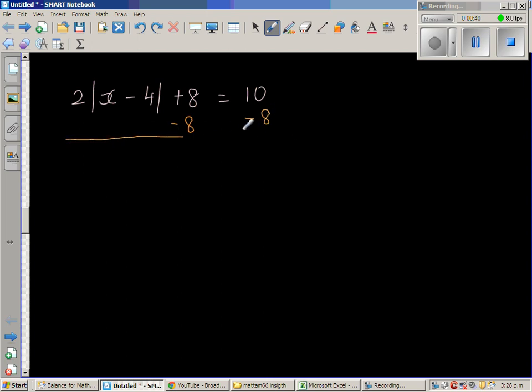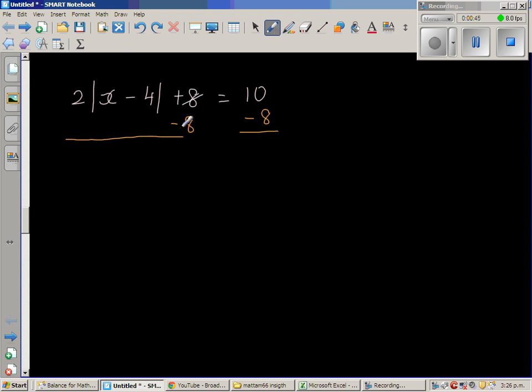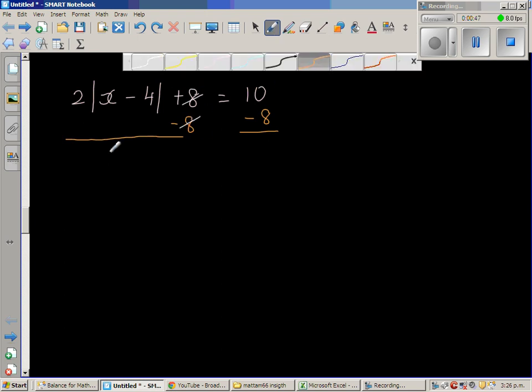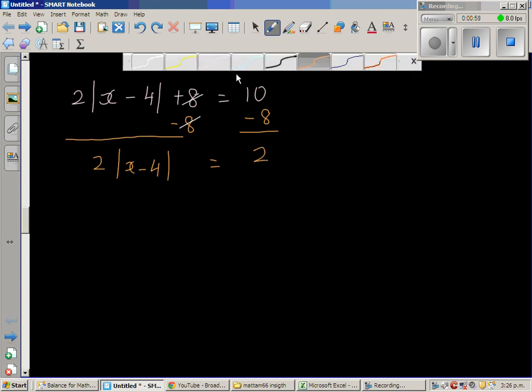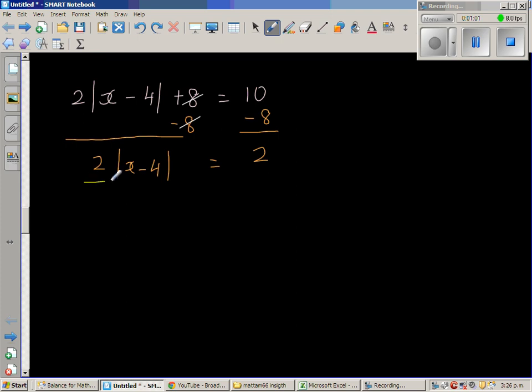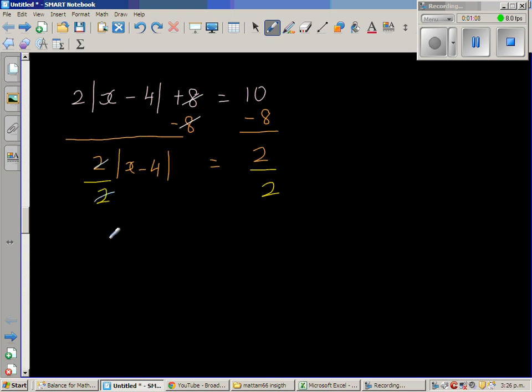So treat equation like two sides of a balance. So what happens is this and this gets cancelled. So 2 times modulus of x minus 4 is equal to 10 take away 8 is 2. Now you've got to get rid of this 2. So I'm going to divide this side by 2. So I'll also divide this side by 2. So what happens is this and this gets cancelled. So modulus of x minus 4 is equal to 1.